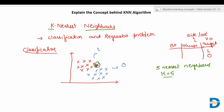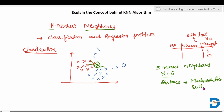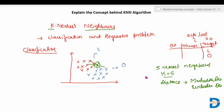How will it find the nearest neighbors? It will calculate the distance from each and every data point, and whichever has the lowest distance are the nearest neighbors. We'll find the five points that are nearest to this point using Manhattan distance or Euclidean distance. With the help of these distances, it will find out which are the nearest neighbors.